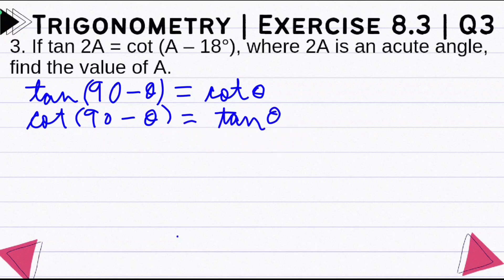So now we will use this and we will find A's value. We will write the equation in the question, that is tan 2A equals cot(A minus 18°).